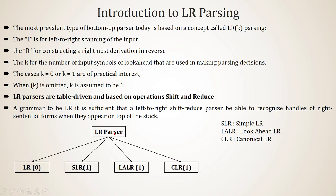In this course we are going to study four types of LR parser: LR0, SLR1, LALR1, and CLR1. LR stands for left to right scanning, R stands for rightmost derivation in reverse. SLR means simple LR. LALR means lookahead LR. CLR means canonical LR. In this video we will also discuss LR0.